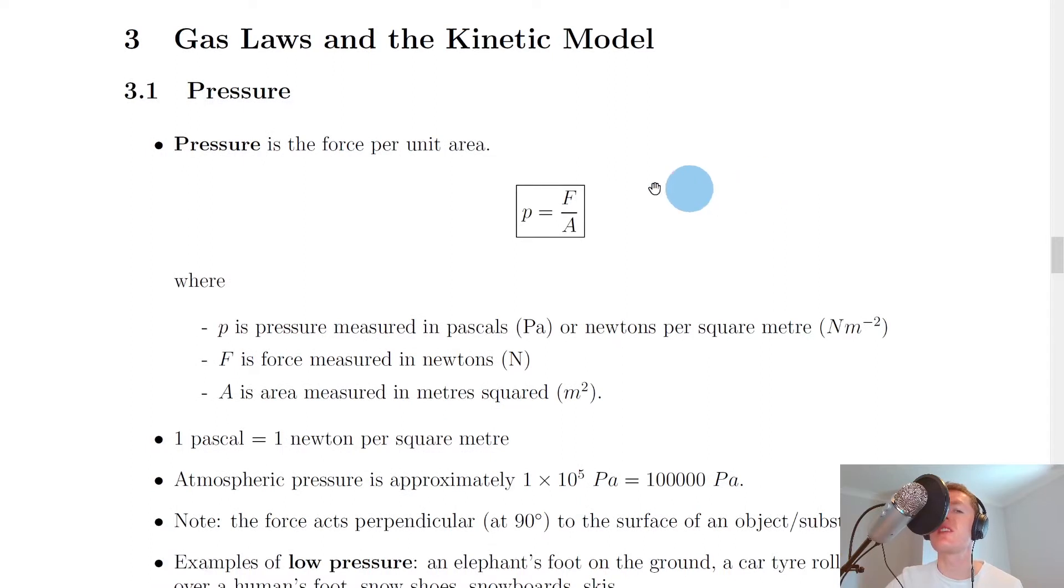So firstly we have a definition for pressure, and you could be asked to state what is meant by pressure. Pressure is the force per unit area, and this leads us to this relationship here. We give pressure the symbol small p, force f, and area a. So we have pressure equals force divided by area, or p equals f over a.